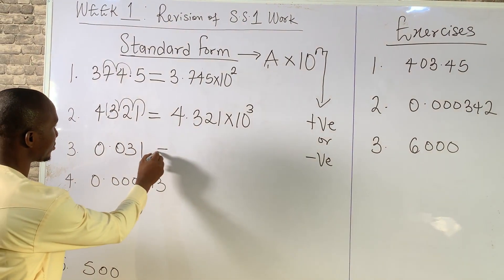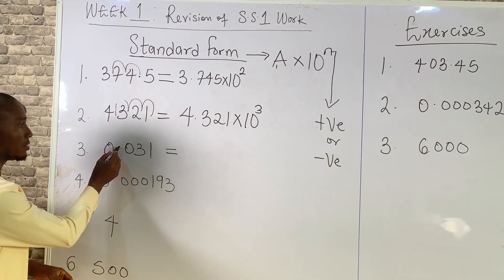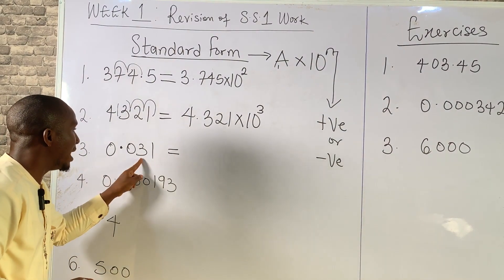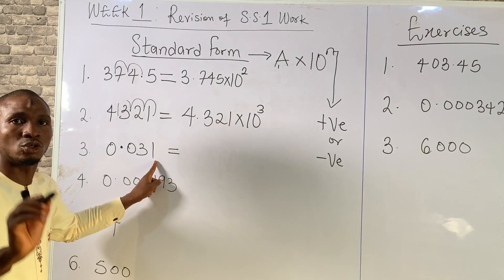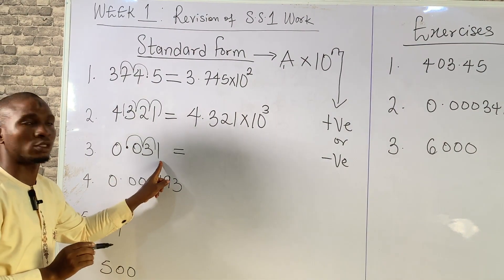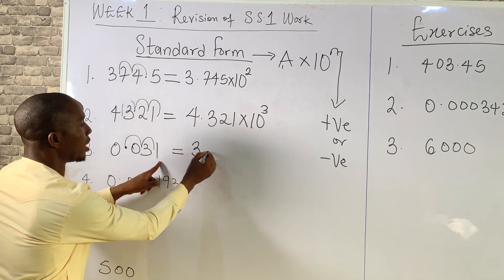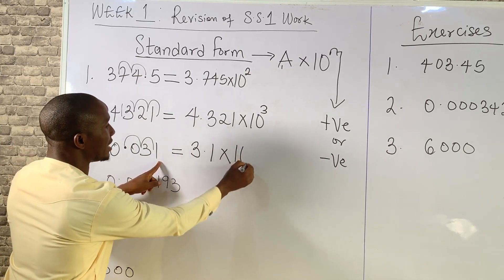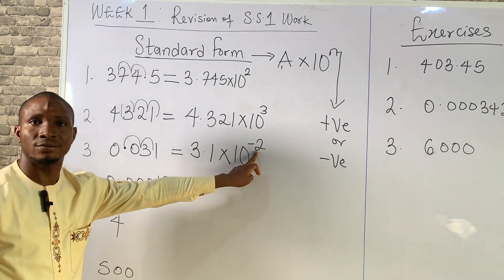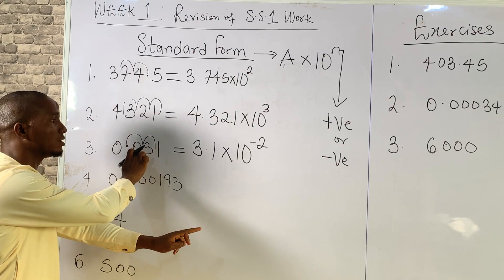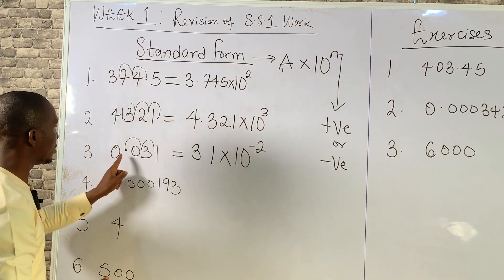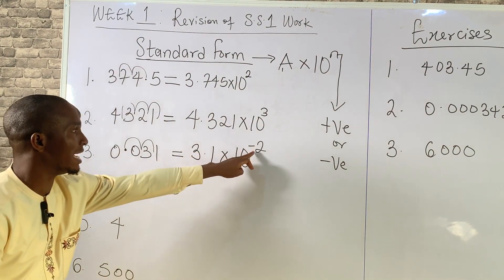Now let's look at the third example. The decimal point must be between the first number and the second number. We move the decimal point 2 places to the right, giving us 3.1 times 10 raised to power minus 2. It's negative because we moved the decimal point towards the right-hand side.